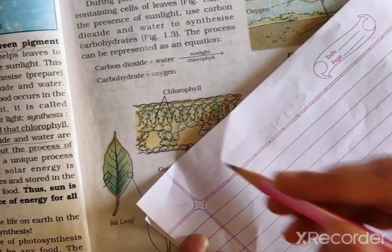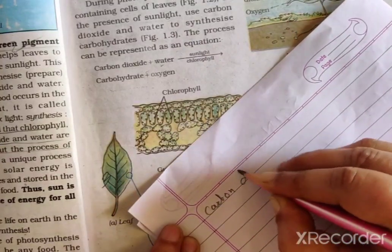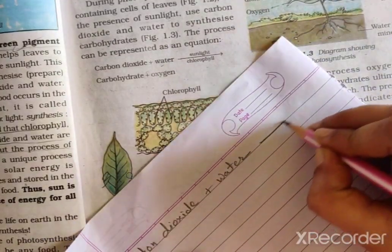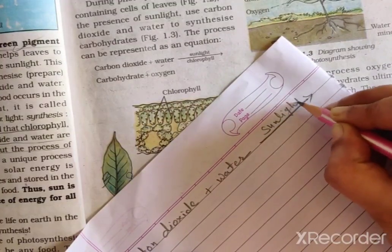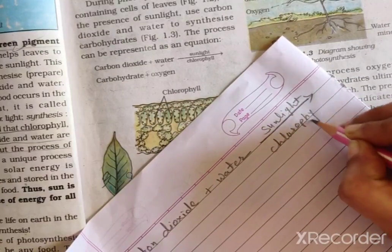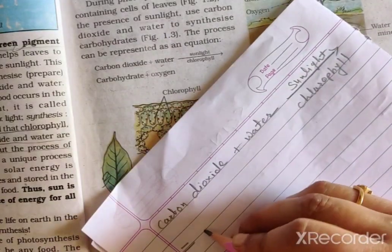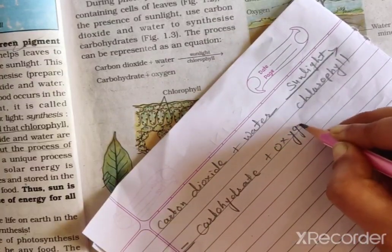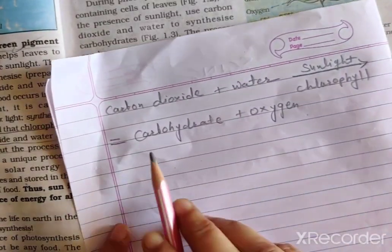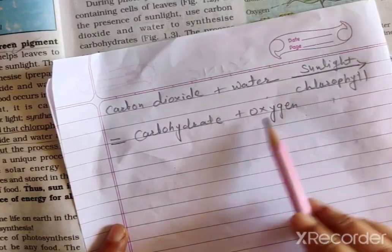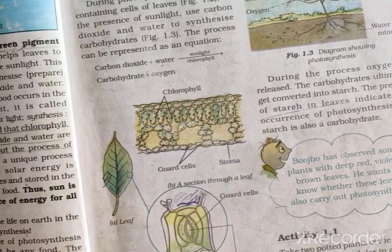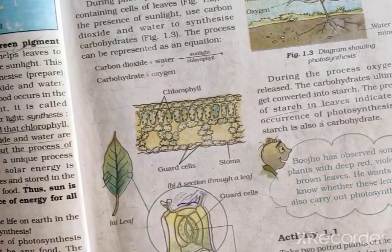The process of photosynthesis can be represented as an equation: carbon dioxide plus water, in the presence of sunlight and chlorophyll, gives carbohydrate plus oxygen. So carbon dioxide plus water in the presence of sunlight and chlorophyll gives carbohydrate and oxygen. This means that during photosynthesis, both carbohydrate and oxygen are released.